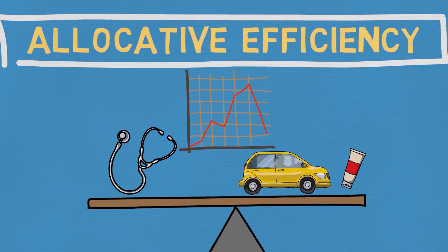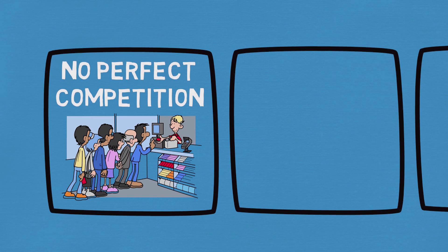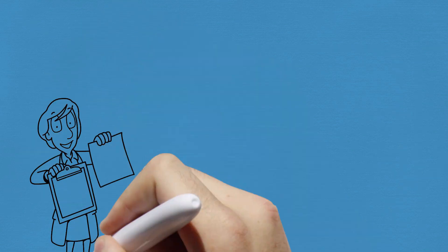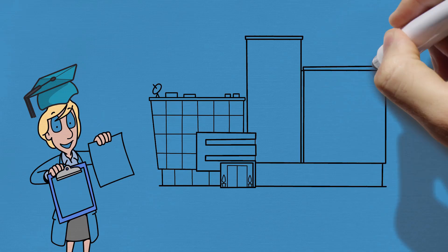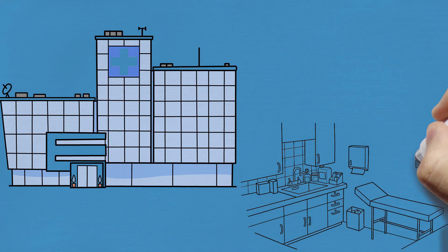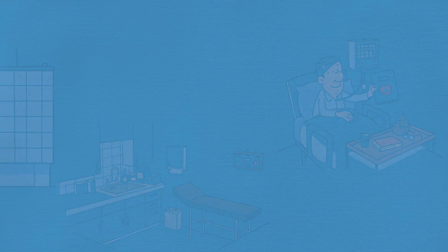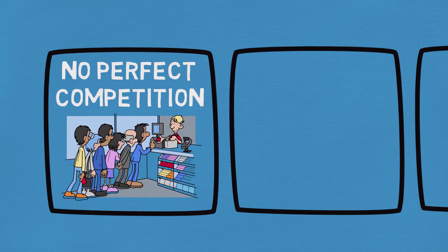Firstly, allocative efficiency assumes that there's perfect competition — in other words, lots of buyers and sellers and no one entity can control the prices. This requires that there aren't any significant barriers to entering the market. In healthcare, you can't just quickly decide to become a doctor; you have to go to medical school and study for years. You also can't quickly start up a new hospital, as there are substantial regulatory hurdles. So healthcare providers already in the market can set prices higher than in a perfectly competitive environment.